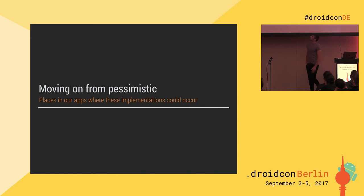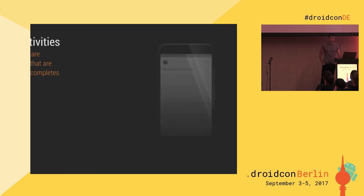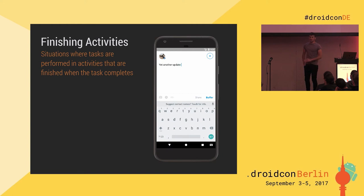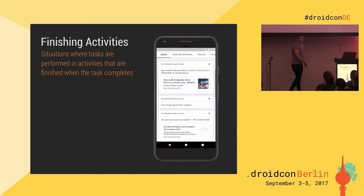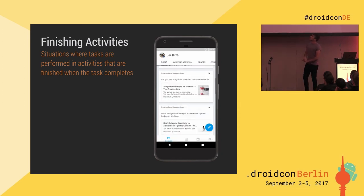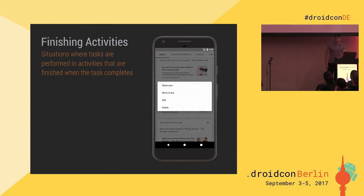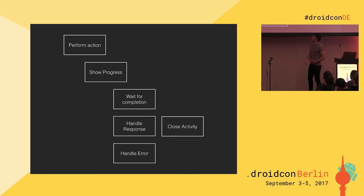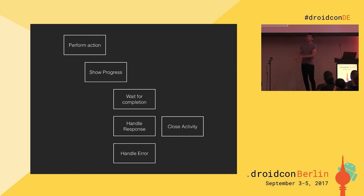Moving on from pessimistic, I just wanted to look at a quick example in our app in the Composer where we changed this. These are called finishing activities — situations where you carry out a task, maybe you hit save or you change something, and the activity closes once that request is complete. In our case it was the Composer. When the users compose an update, we close the screen. So we've typed our text, we perform some actions such as hitting the Buffer button, and we show a progress dialogue. Then we wait for the completion, and when that's finished we handle the result. If that's successful, we previously closed the activity, otherwise we handled the error.